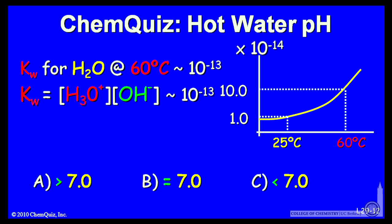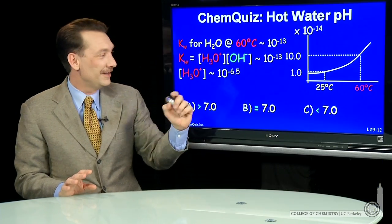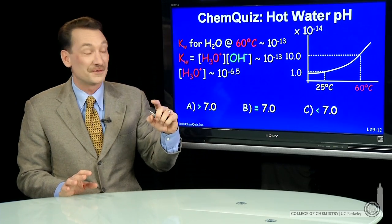And in pure water, the product of H3O plus and OH minus will be 10 to the 13th. So these two concentrations will be equal in pure water, and both of them 10 to the minus 6.5, approximately.